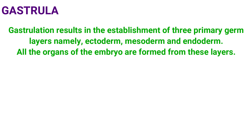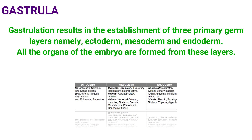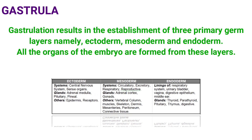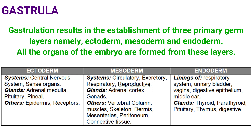At class 12 level it is very difficult to memorize which body parts are formed from ectoderm, mesoderm, and endoderm. A chart has been prepared listing mostly those systems and glands that are asked in 12th class or NEET exams — nothing extra has been included. Try to memorize this chart. The next heading is extra embryonic membranes. The extra embryonic and fetal membranes are formed from the trophoblast. The human embryo has four extra embryonic membranes: amnion, yolk sac, chorion, and allantois.